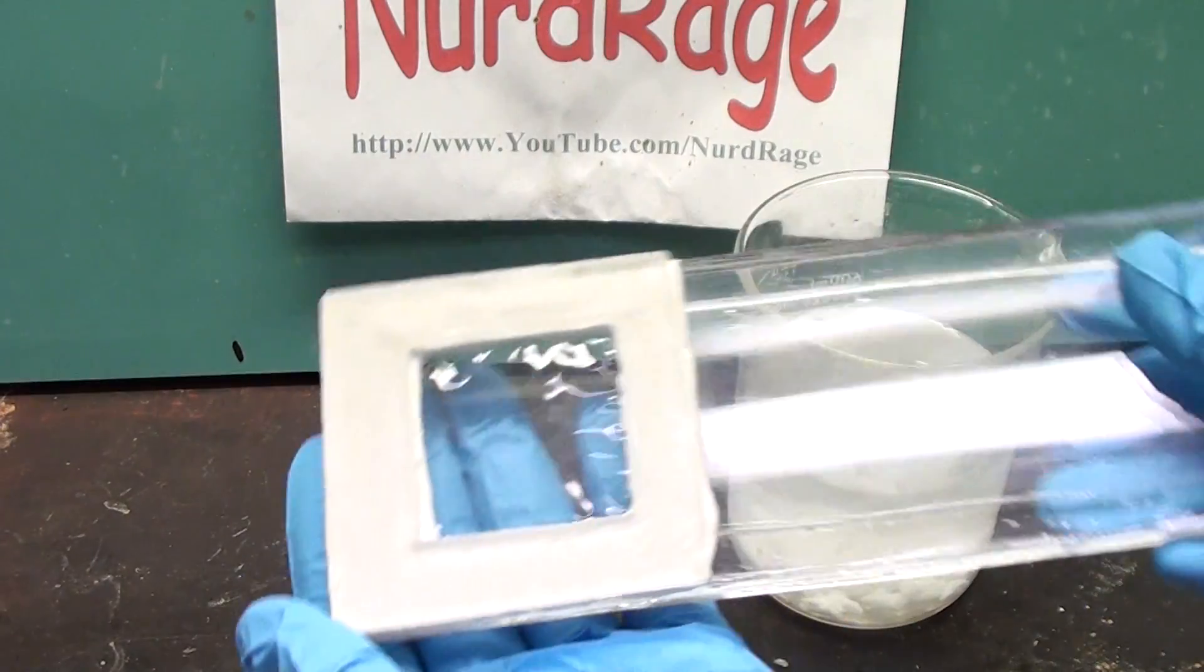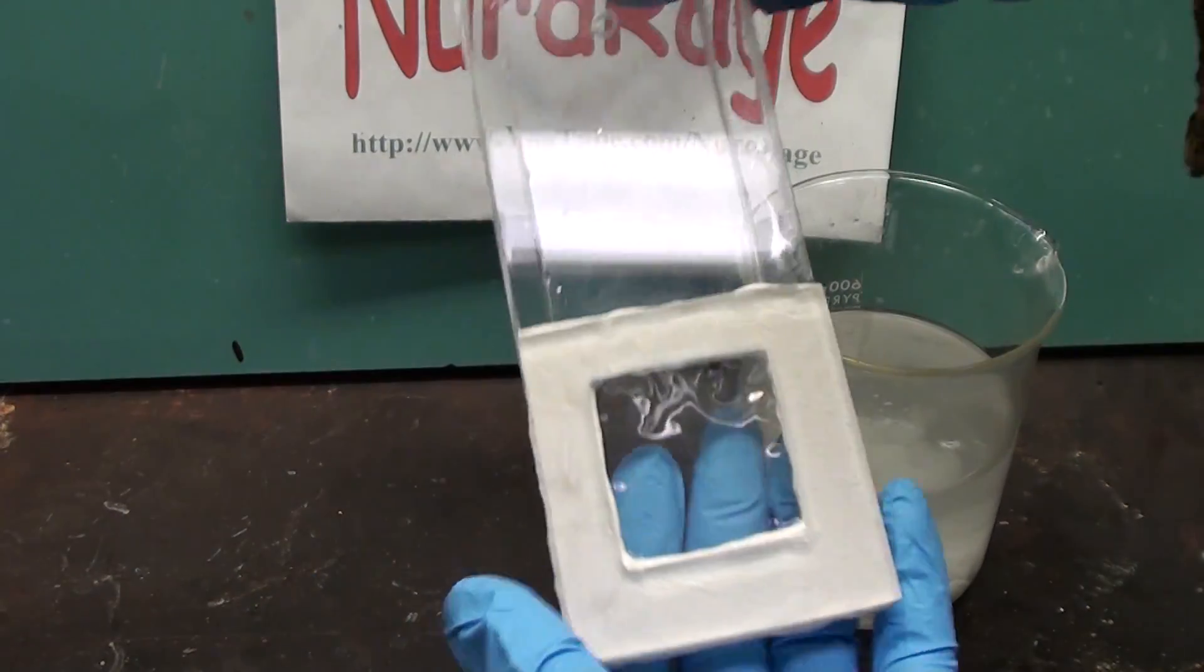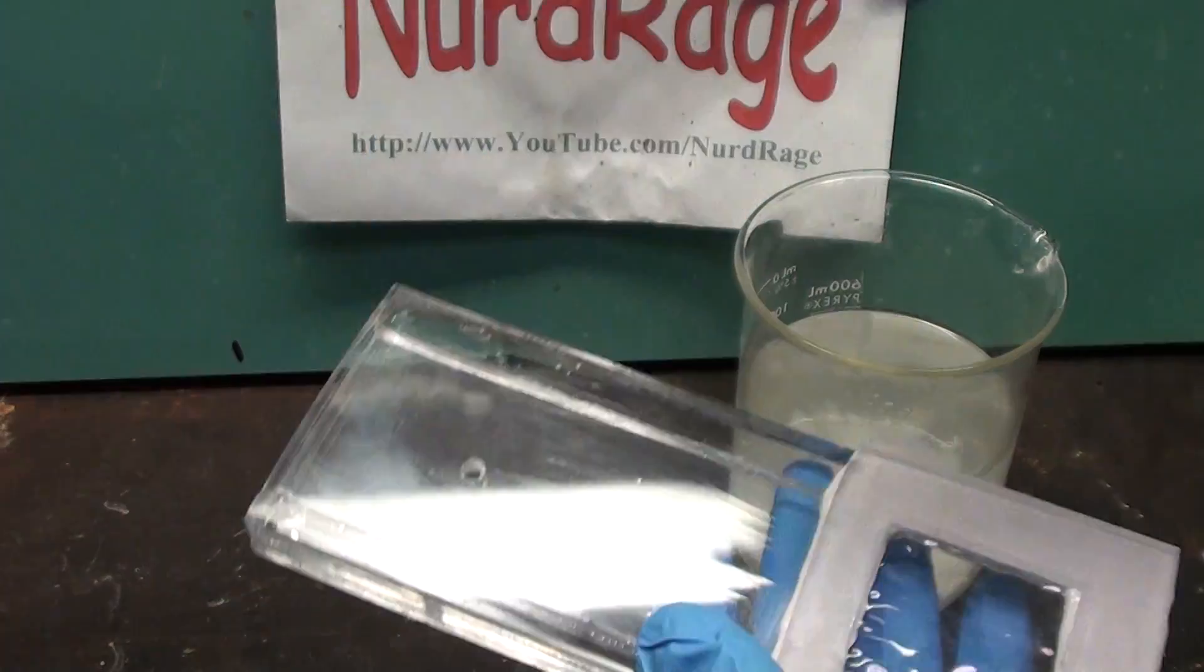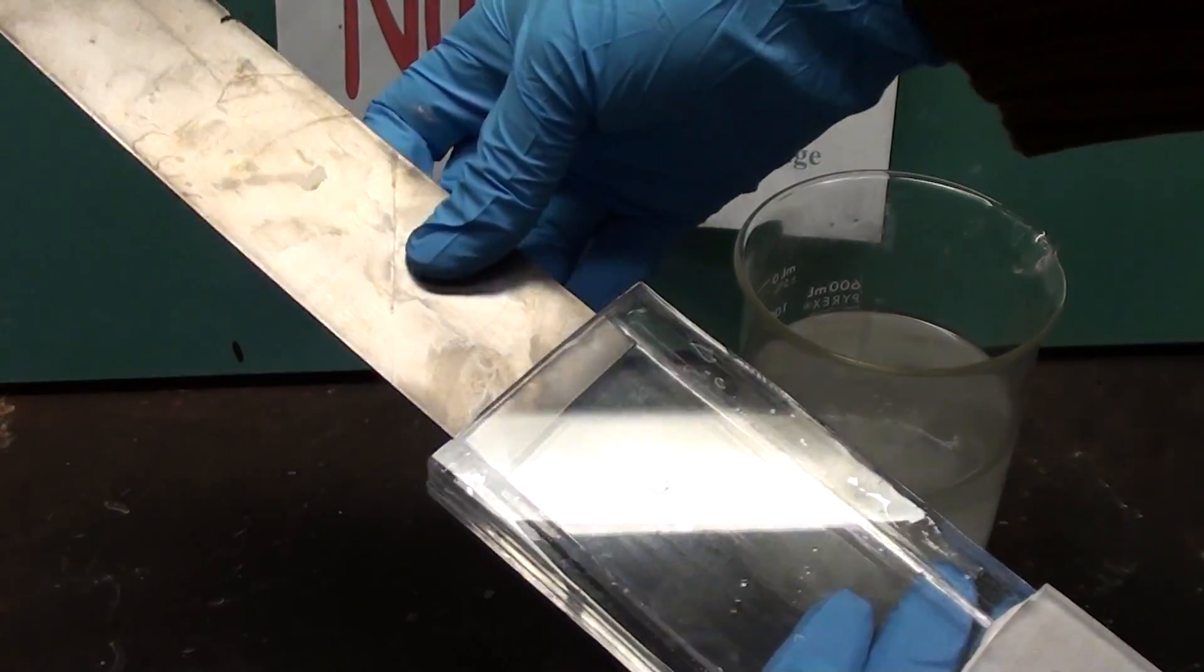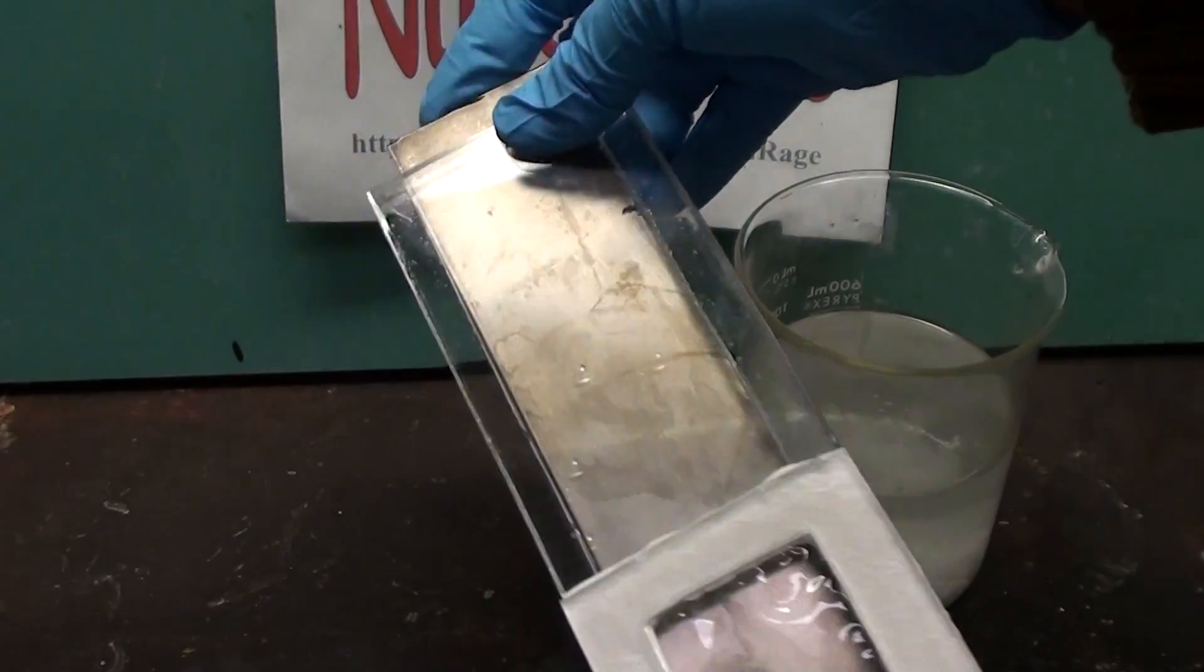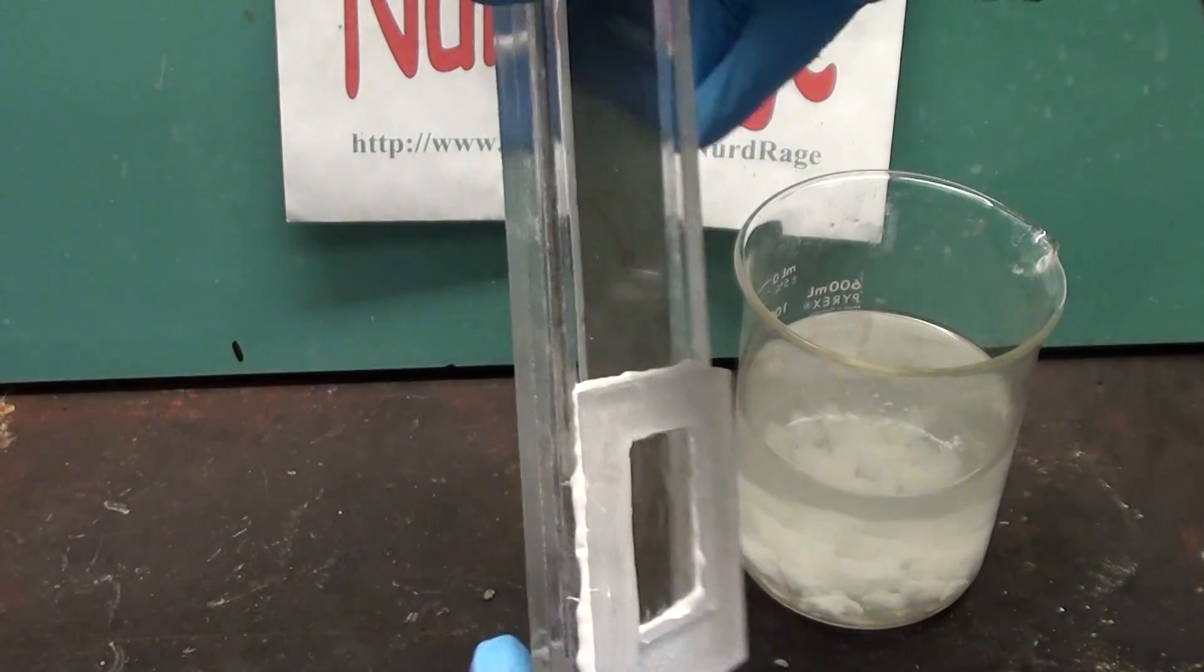Then we get our nafion divided membrane cell that we built in the previous video. This will serve as the cathode compartment. I'm going to use a titanium plate as the cathode but you can use copper or steel since the cathode isn't subject to the same oxidative stresses as the anode.